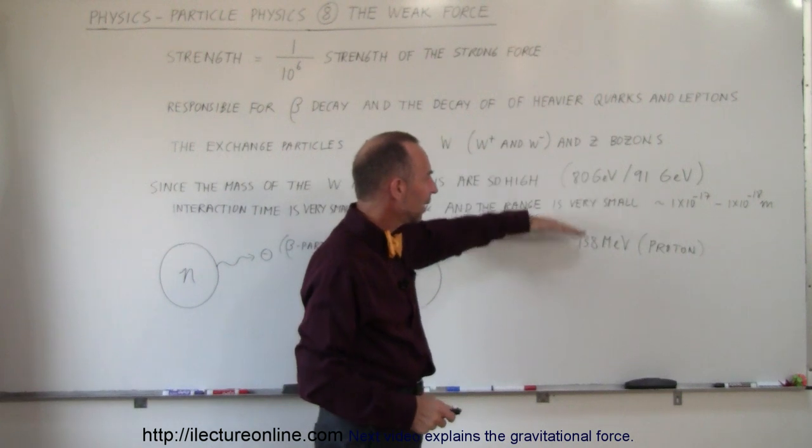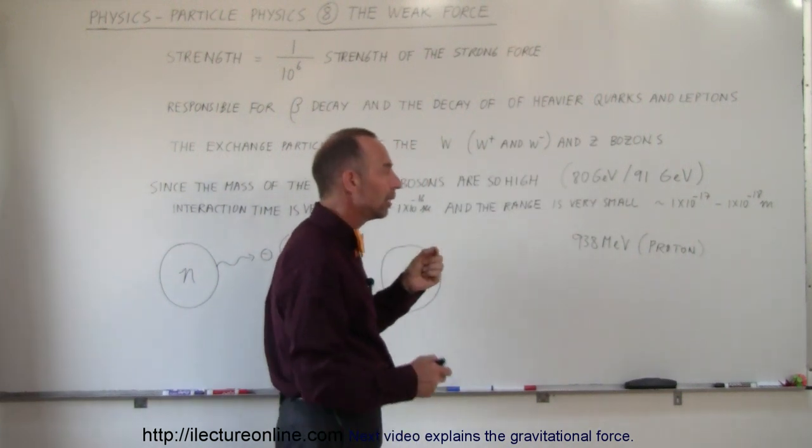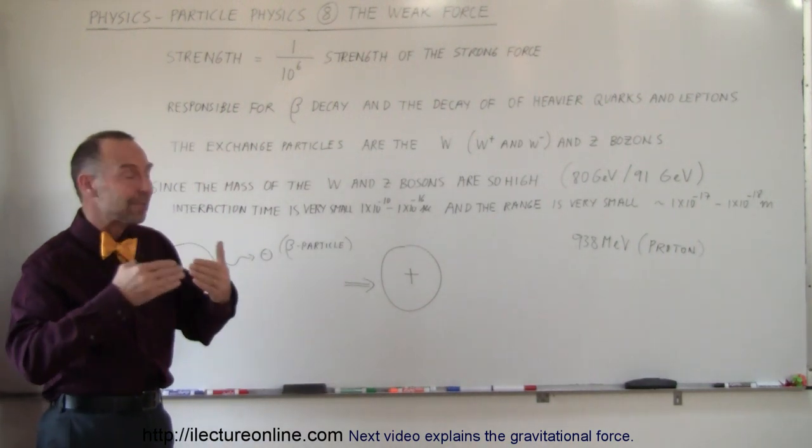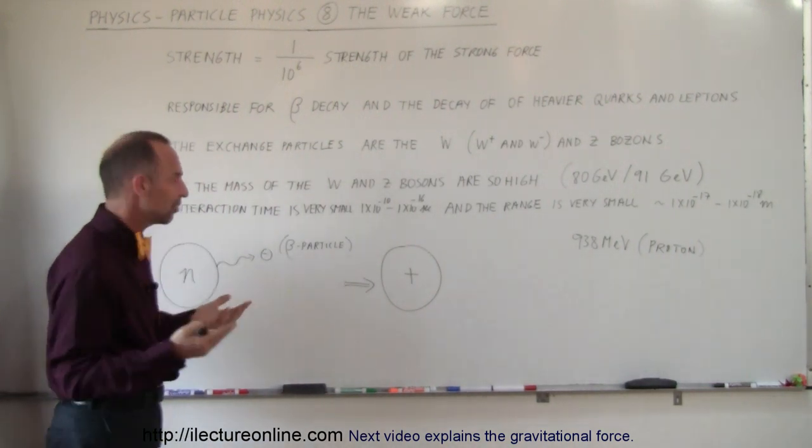But you can see that it's roughly 100 to 1. So the mass of a boson, which is an interchanged particle of the weak force, is 100 times as massive as a proton and a neutron, which is kind of interesting.